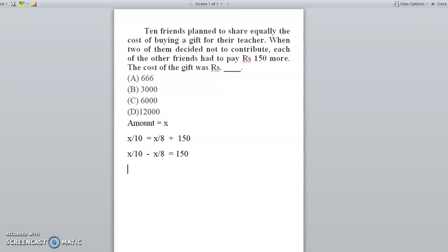Now, for 10 and 8, the common multiple you can take is 40. So what will happen to this statement? 40 means 4 into 10, so 4x minus 5x divided by 40.